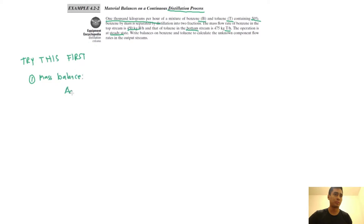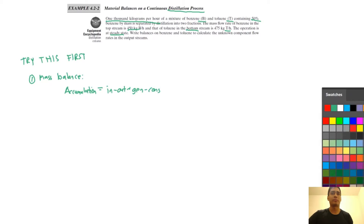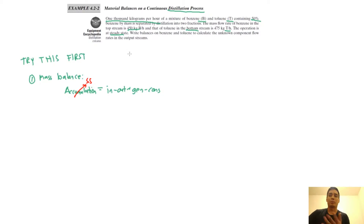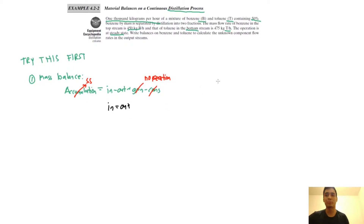When in doubt: accumulation equals in minus out, plus generation minus consumption. Get used to seeing that equation. From steady state, we can assume that accumulation is zero. Steady state means there's no buildup in the system. We're also going to assume there's no reaction, which gets rid of the generation and consumption terms. So our working equation is in minus out equals zero, or simply in equals out — summing up all the terms going in and all the streams coming out.